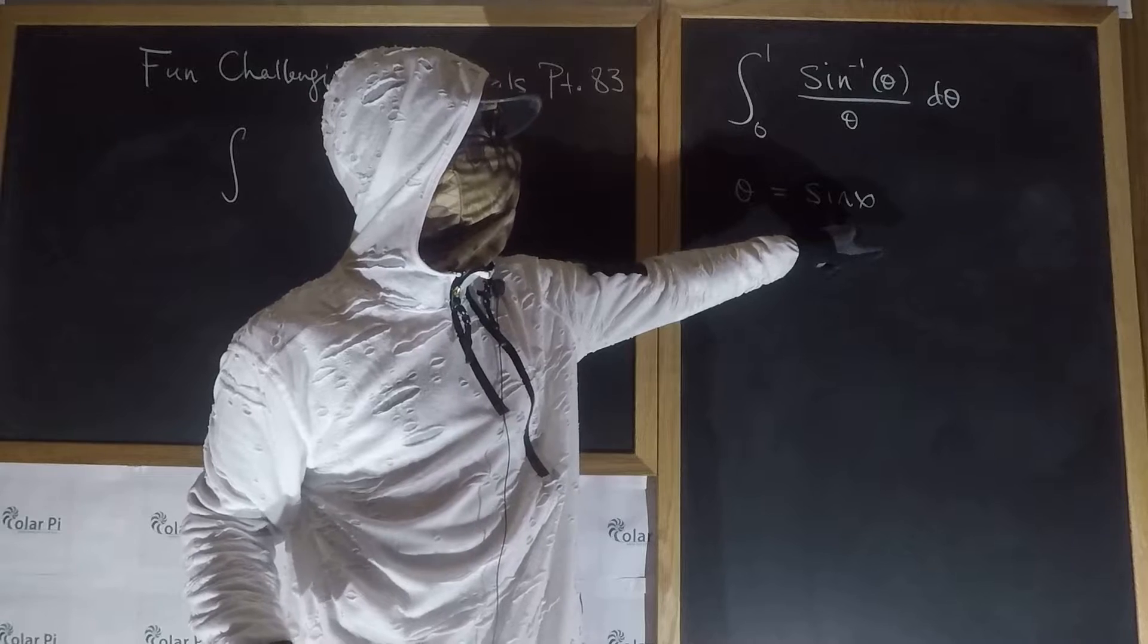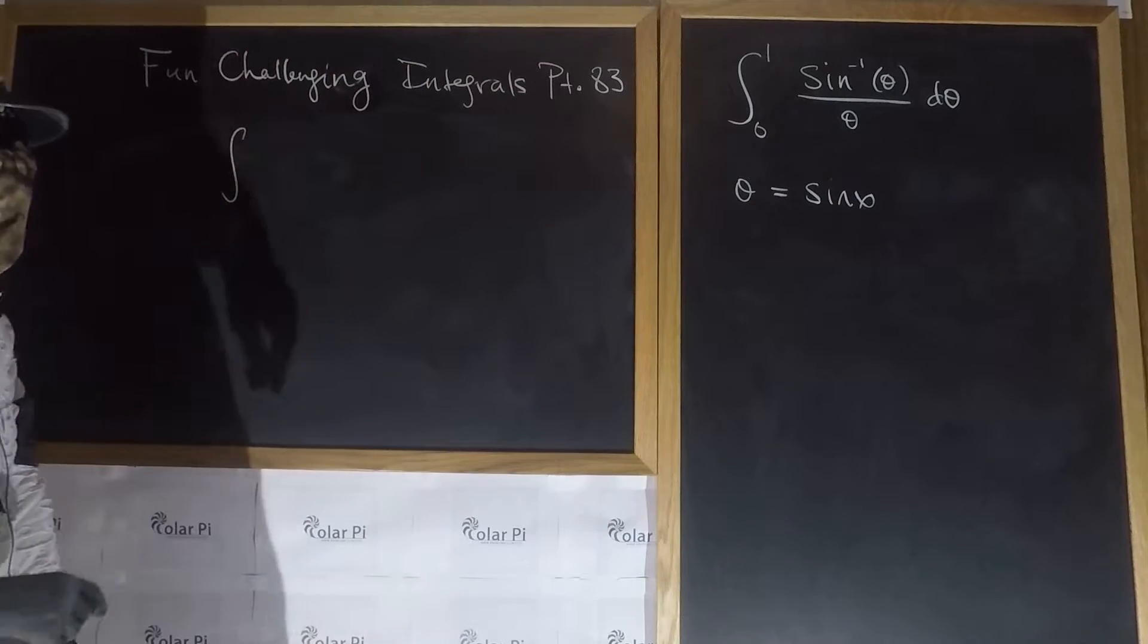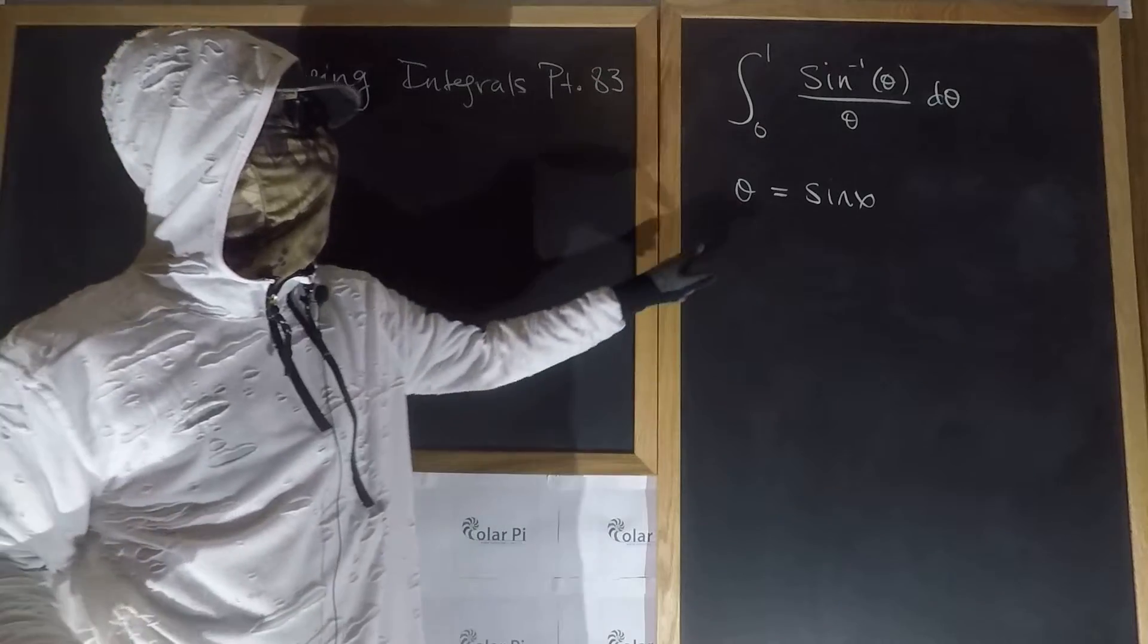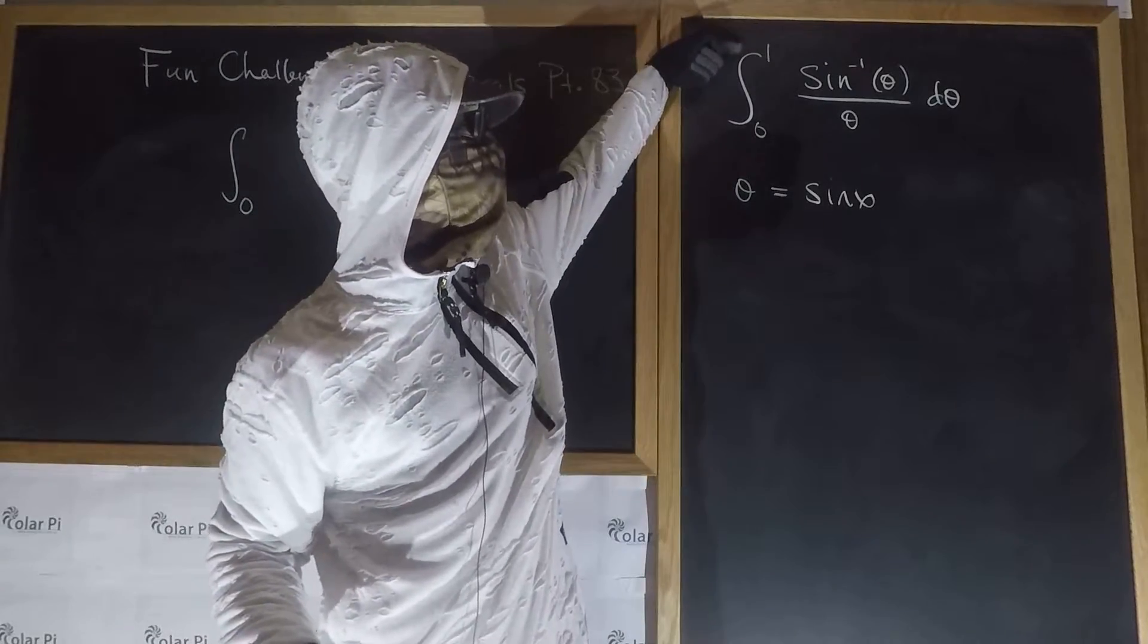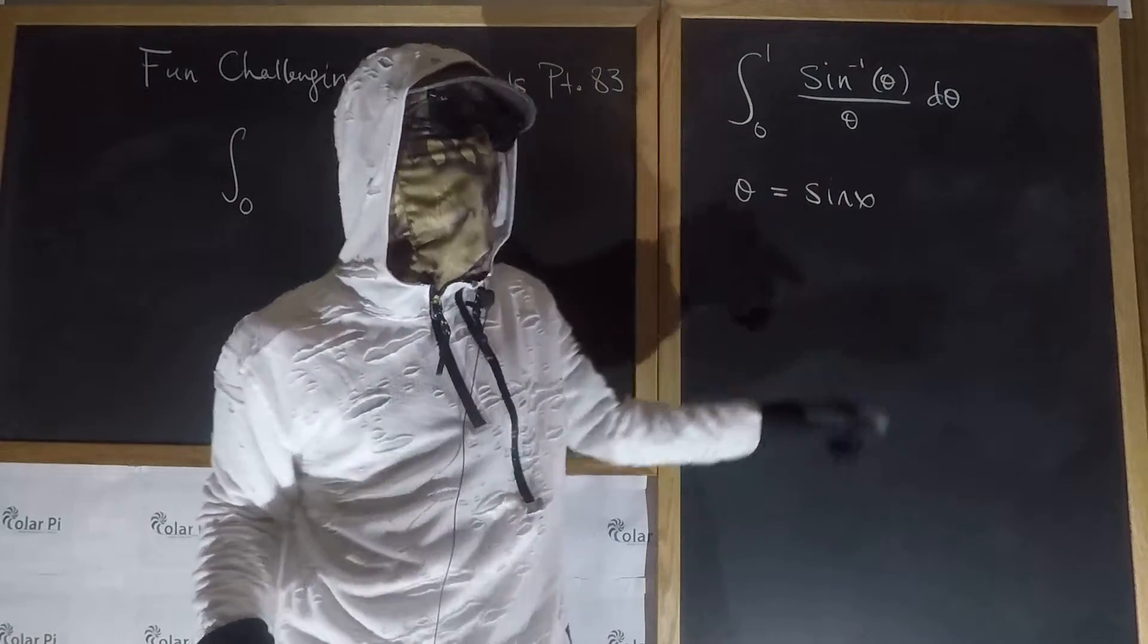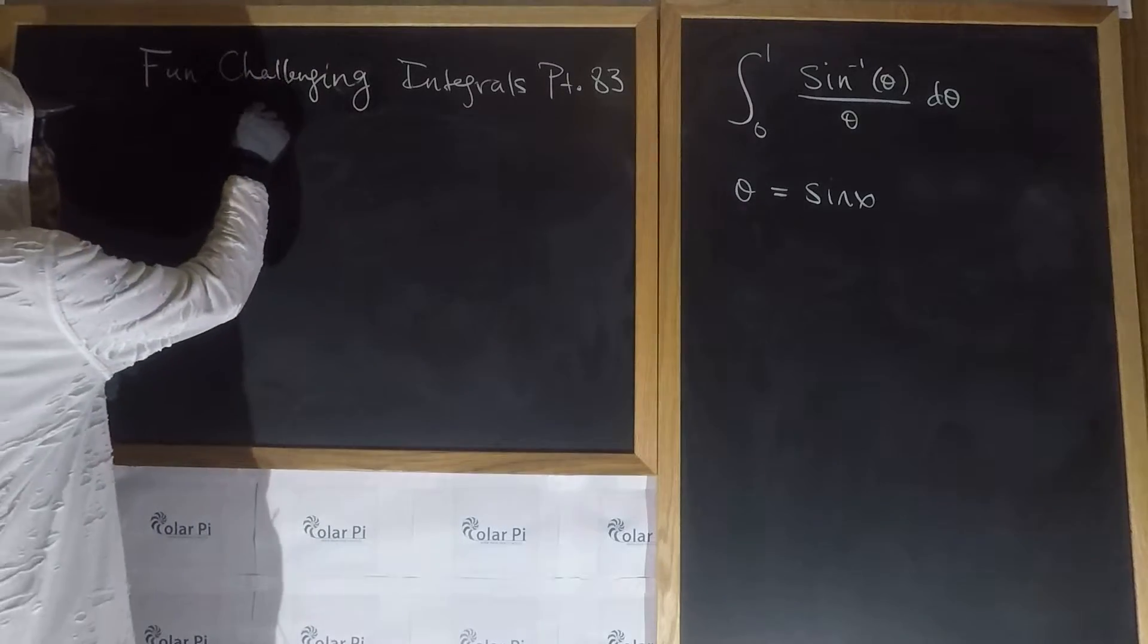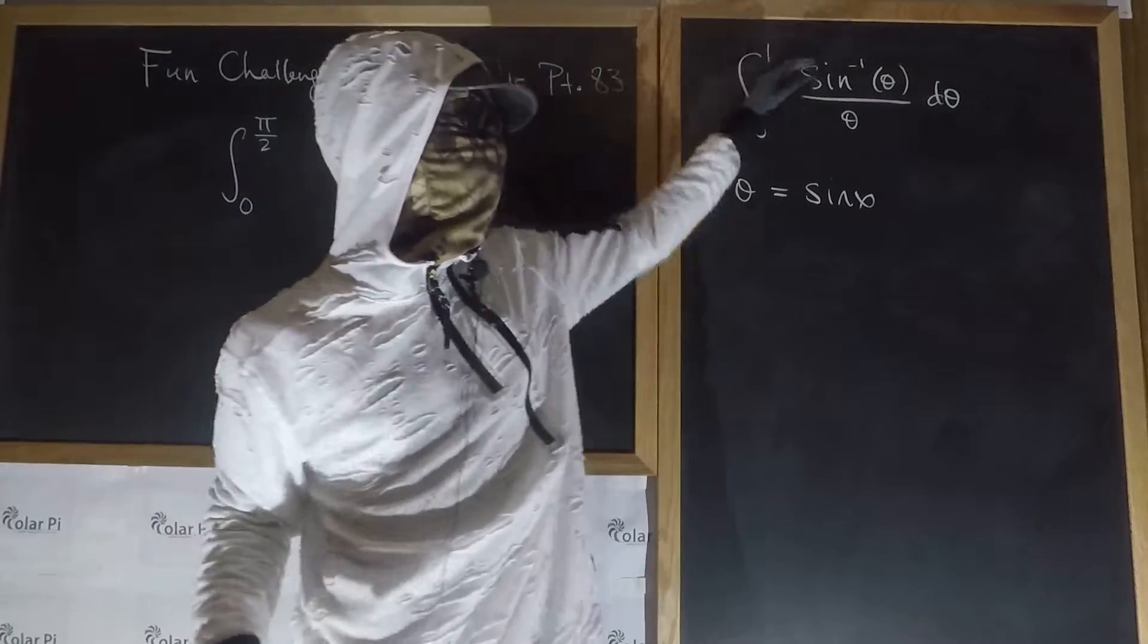When theta is one, we get one equals sine x, so that means x is pi over two because we're switching from theta to x.